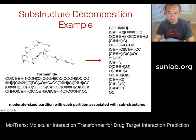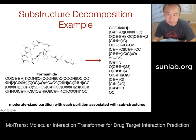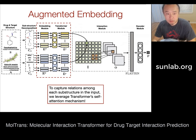For substructure decomposition, we leverage all available molecules and protein sequences to mine frequent subsequences from existing databases and use them as our substructures. For example, given a SMILES string of a molecule, the decomposition generates substructures where each line corresponds to a substructure that frequently occurs in existing molecule databases. The same algorithm is applied to amino acid sequences as well.